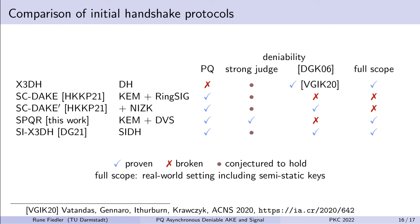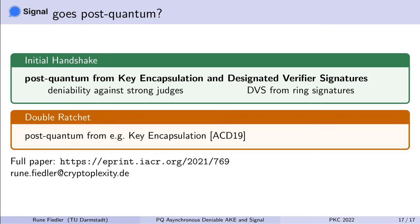All in all, we are very happy to see that many people are working towards making Signal post-quantum. Our contribution is our protocol SPQR, a post-quantum replacement for the initial handshake using key encapsulation mechanisms and designated verifier signatures. Along the way, we introduced a new definition of deniability with strong judges, which our protocol fulfills, and we showed that you can build DVS from ring signatures. Using a post-quantum replacement for the initial handshake such as SPQR together with a Double Ratchet replacement using key encapsulation mechanisms from Alwen et al., these two in combination can be used to build a post-quantum alternative of Signal. Thank you very much for your attention and please check out our full paper on ePrint.